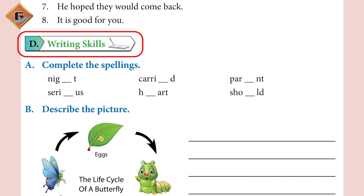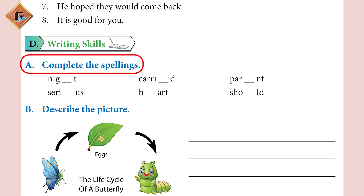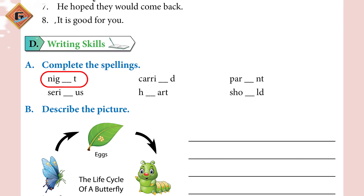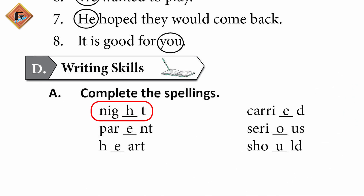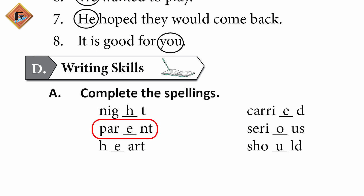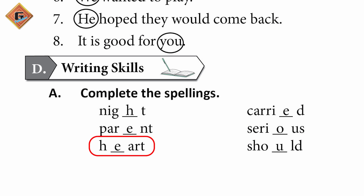The last section is Writing Skills. Question A: Complete the spellings. N-I-G-H-T — Night. C-A-R-R-I-E-D — Carried. P-A-R-E-N-T — Parent. S-E-R-I-O-U-S — Serious. H-E-A-R-T — Heart. S-H-O-U-L-D — Should.